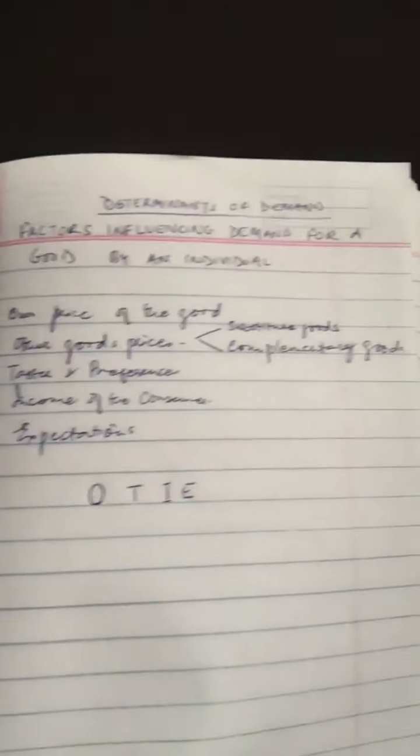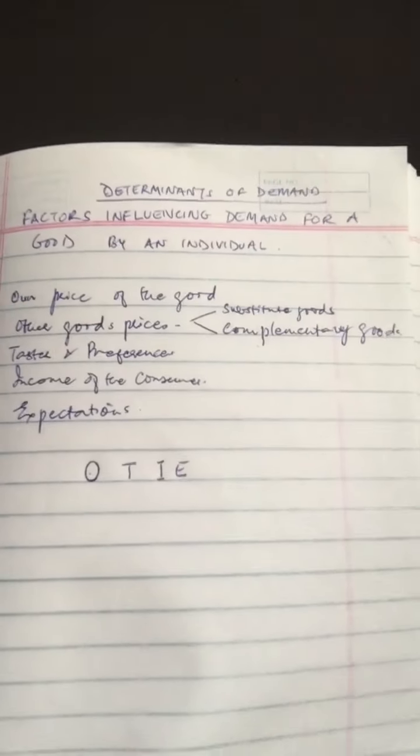When talking about individual demand, learn the factors using the mnemonic O-T-I-E: O for own price, O for other prices of goods, T for taste and preference, I for income, and E for expectations. Go through this while I explain each one.